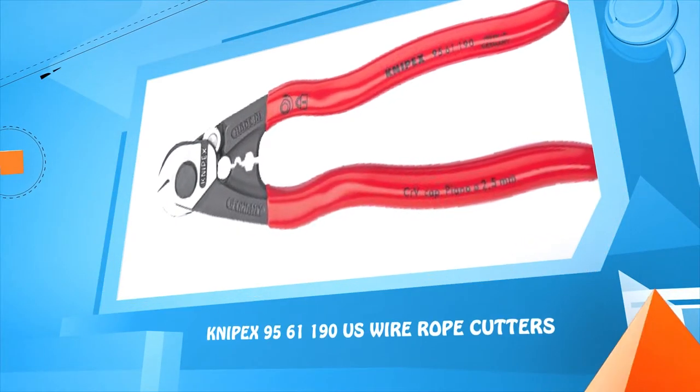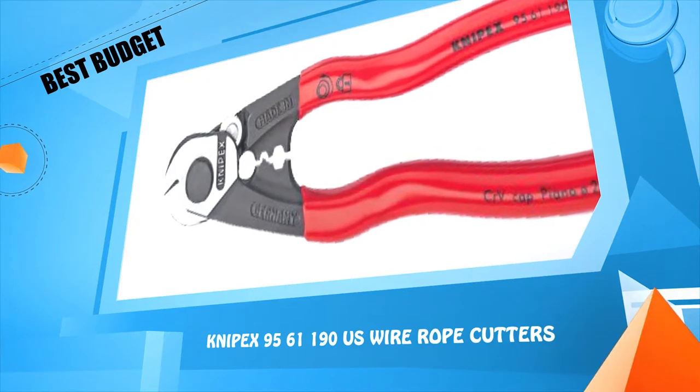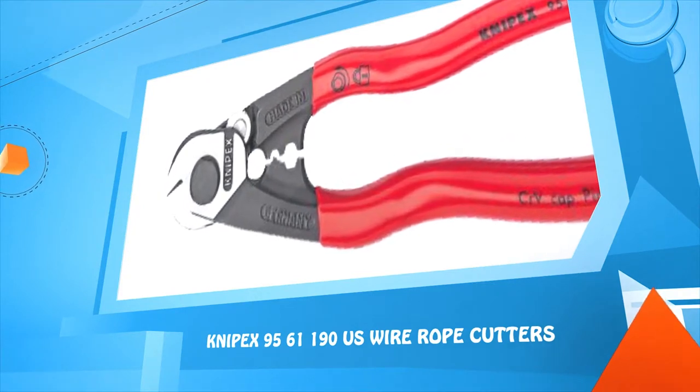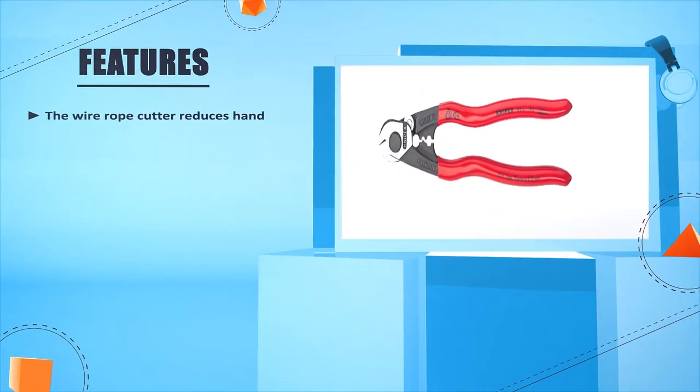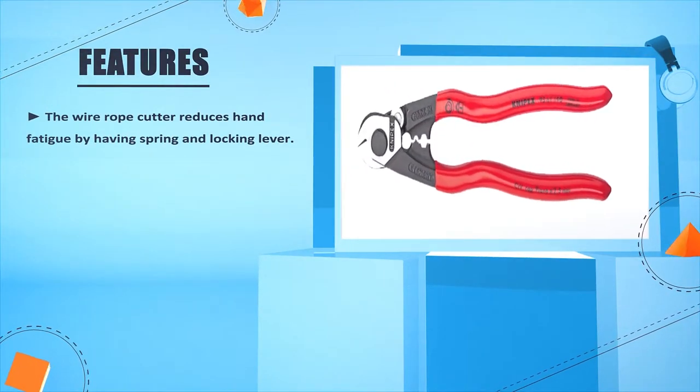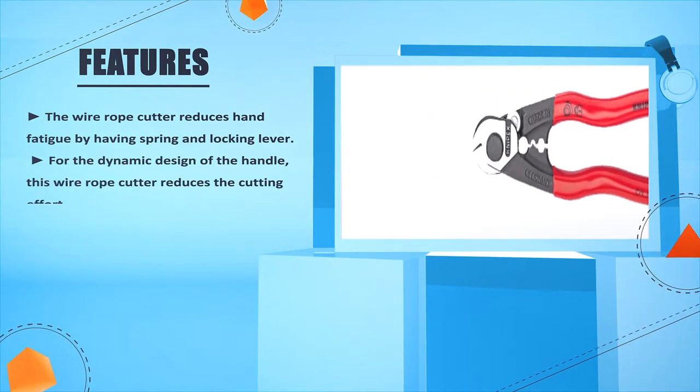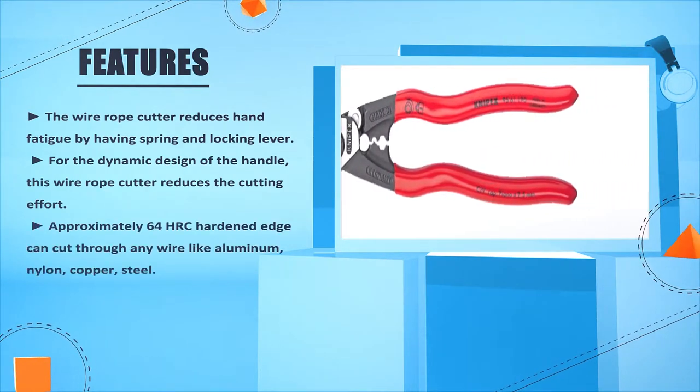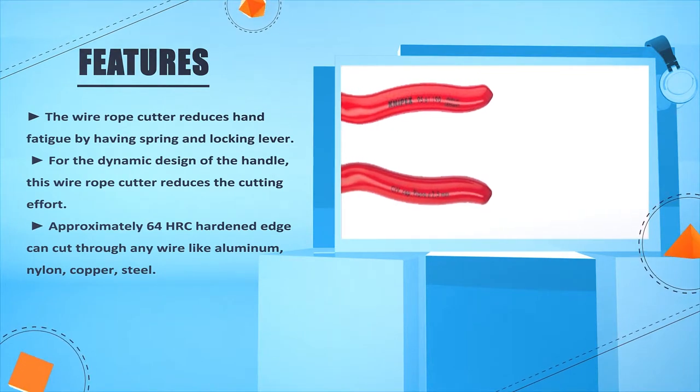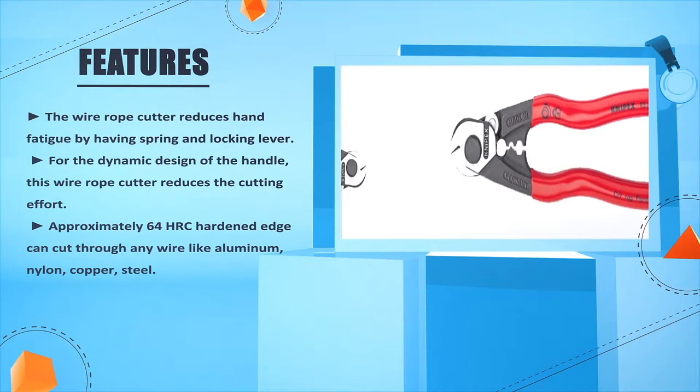Number 2: Knipex 95-61-190 wire rope cutters. The wire rope cutter reduces hand fatigue by having spring and locking lever. For the dynamic design of the handle, this wire rope cutter reduces the cutting effort. Approximately 64 HRC hardened edge can cut through any wire like aluminum, nylon, copper, and steel.